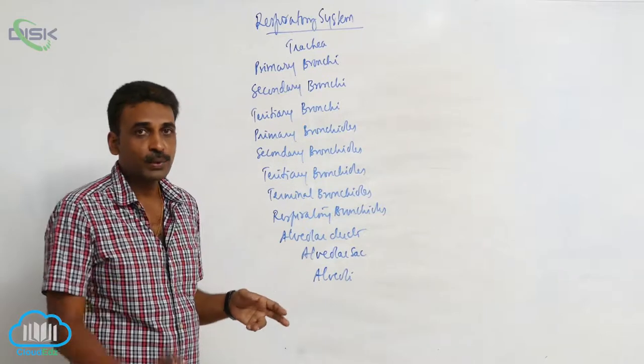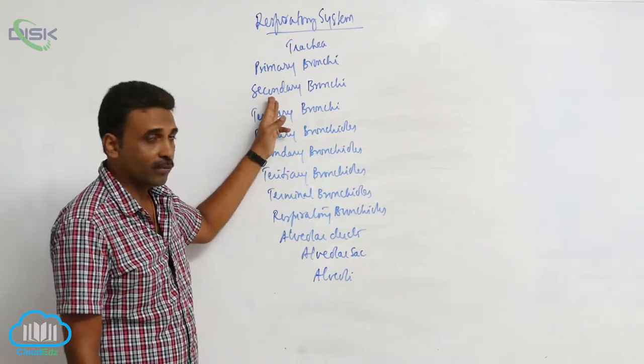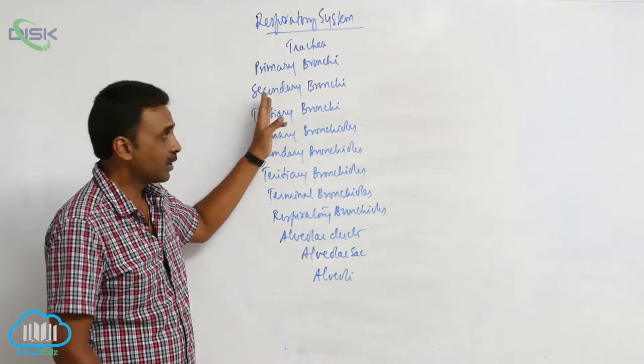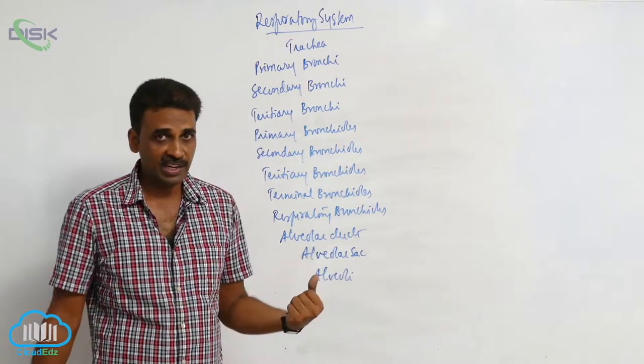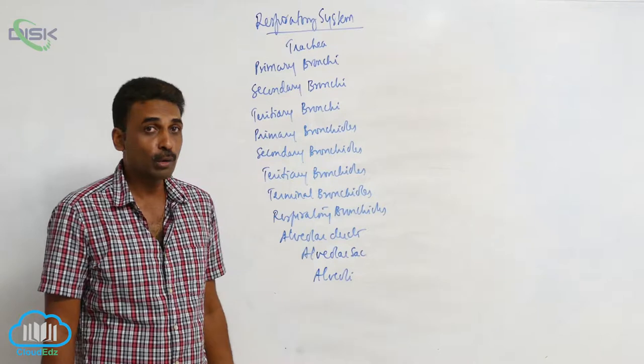Each primary bronchus enters into the lungs and forms three secondary bronchi on the right side and two secondary bronchi on the left side. They are also called lobar bronchi.